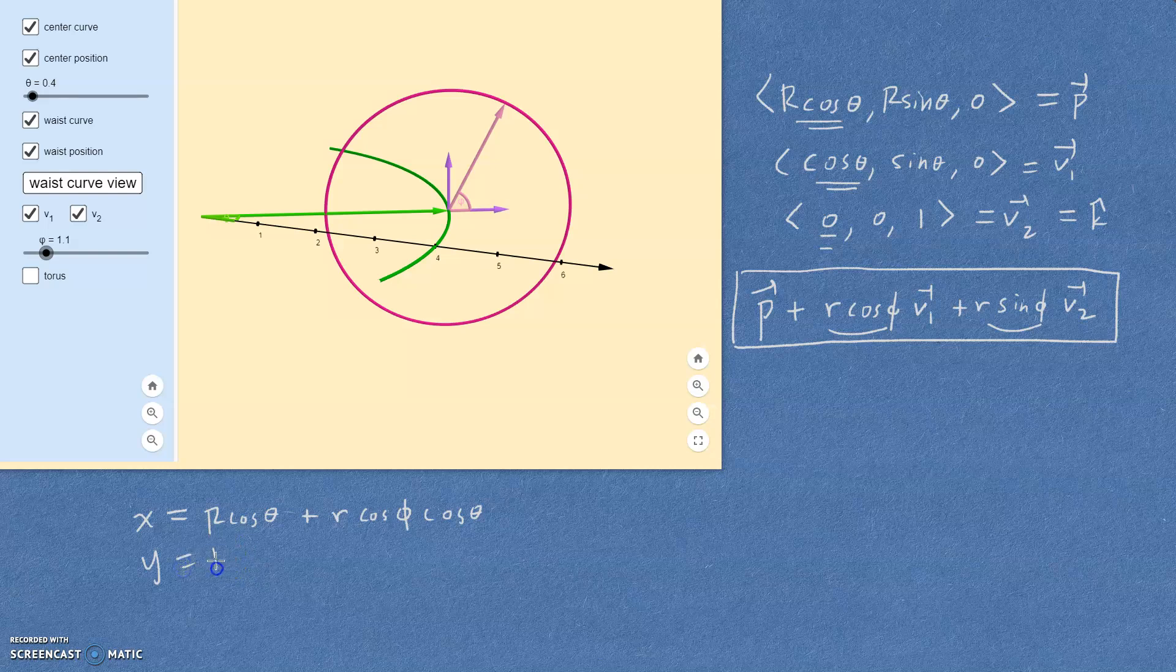The y component very similarly is going to be r sine theta plus little r cosine phi times sine theta, also with a zero in that y component. And lastly for the z component, we're going to get nothing but little r sine phi for that. And that is the parameterization of the torus.